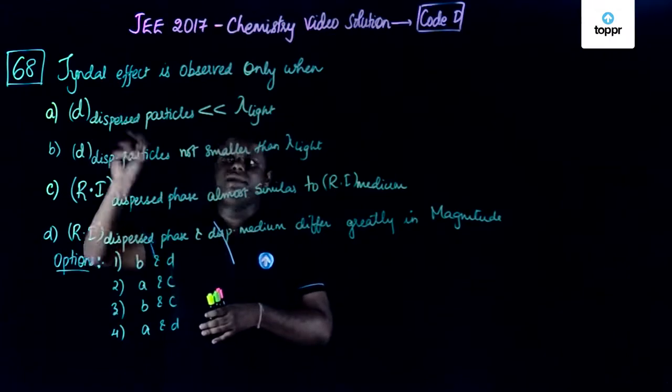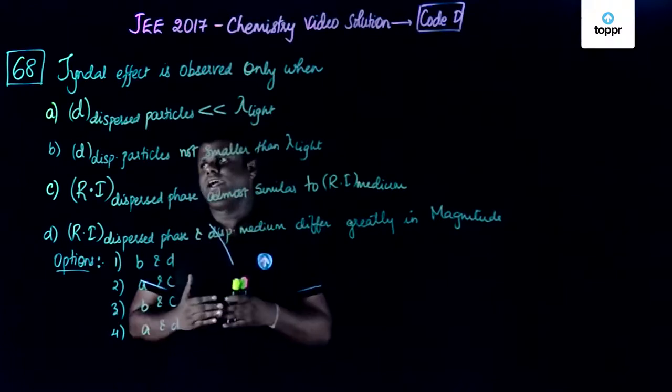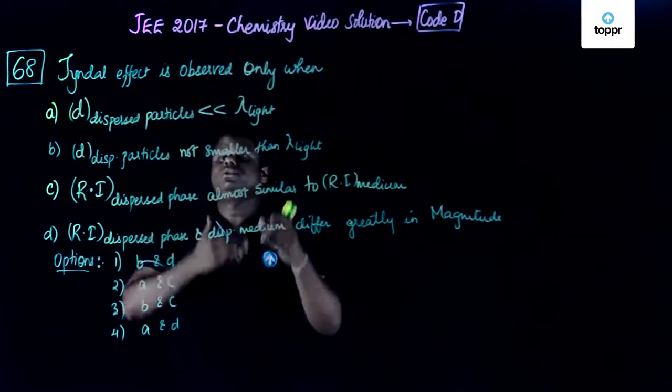When the dispersed particles diameter is smaller than lambda of light, they won't be able to scatter light.